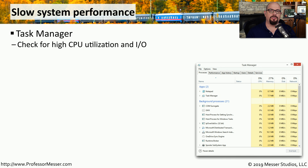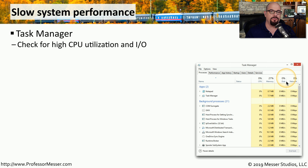One of the most challenging problems to troubleshoot is when someone says their system is slow. There are so many things that can cause slowdowns on a computer, so it's best to start troubleshooting where the slowdown is actually occurring. One of the best places to start is the Task Manager, which shows you real-time information on CPU, memory, disk utilization, network traffic, and more. You can sort these categories to narrow down exactly what app or process may be using the most resources.